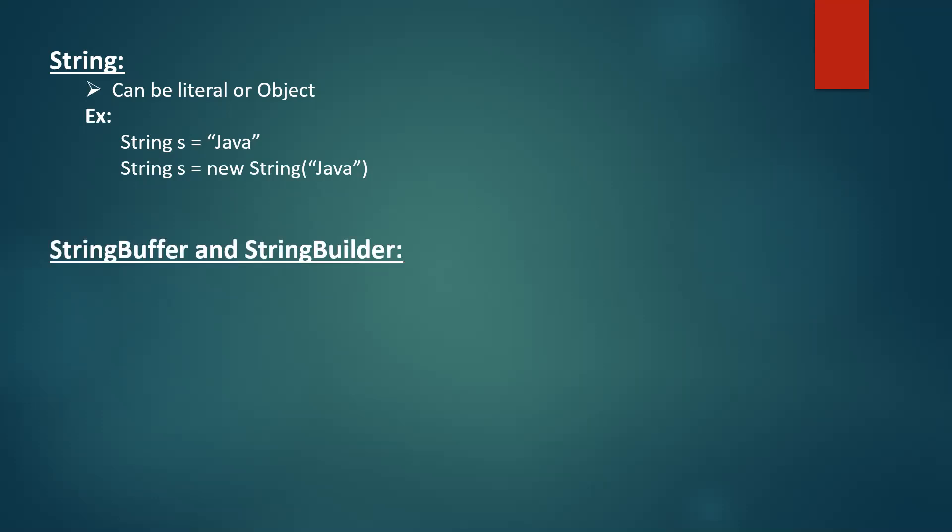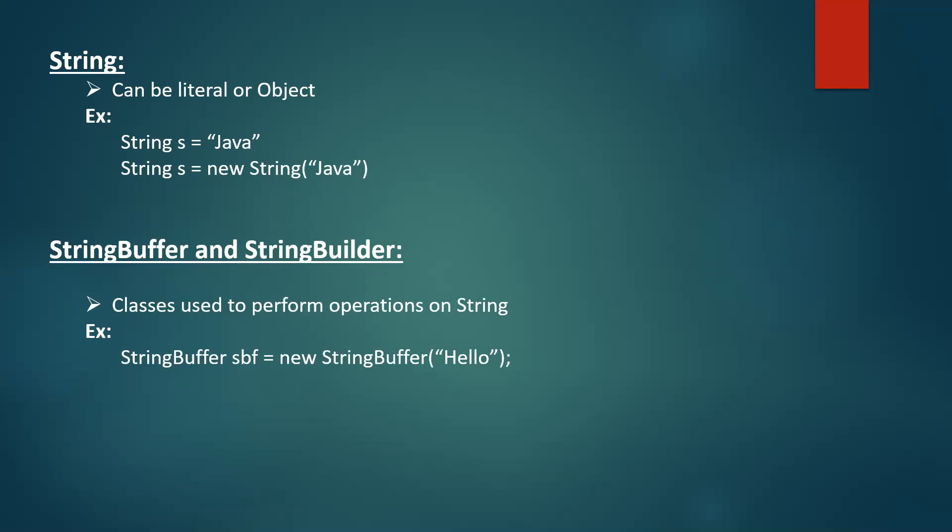Next are StringBuffer and StringBuilder. These two are classes which are used to perform operations on a string. We create an object using the new operator and pass a string as a parameter to the StringBuffer class. We can use methods within the StringBuffer class — append is one method which is used to append a string to the existing string.